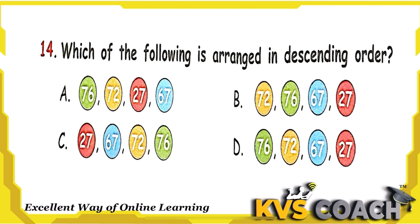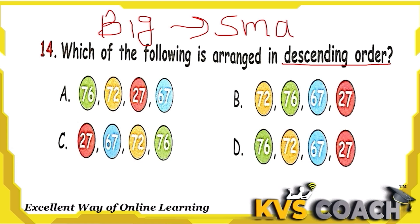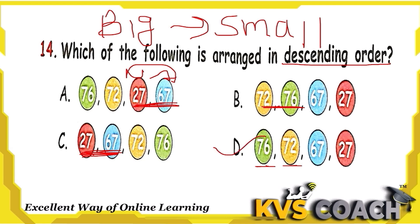The next question: which of the following is arranged in descending order? Descending means big to small — the biggest number is first and the smallest is last. Checking option A: 76, 72, 27, 67 — no, there's a glitch. Option B starts with 72 then 76, so a bigger number is in the middle — wrong. Option D is 76, 72, 67, 27 — that is big to small. Option D is the right answer.